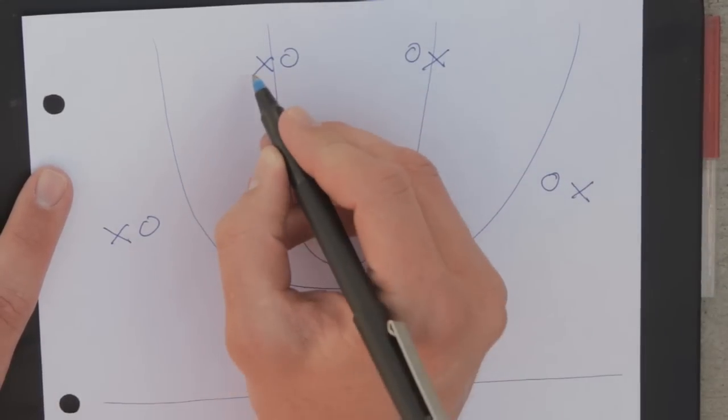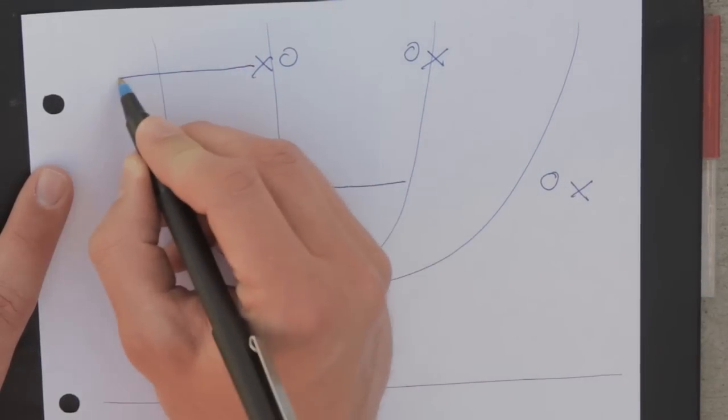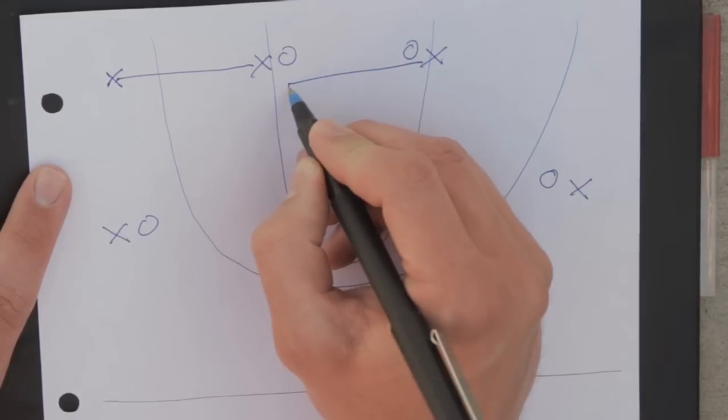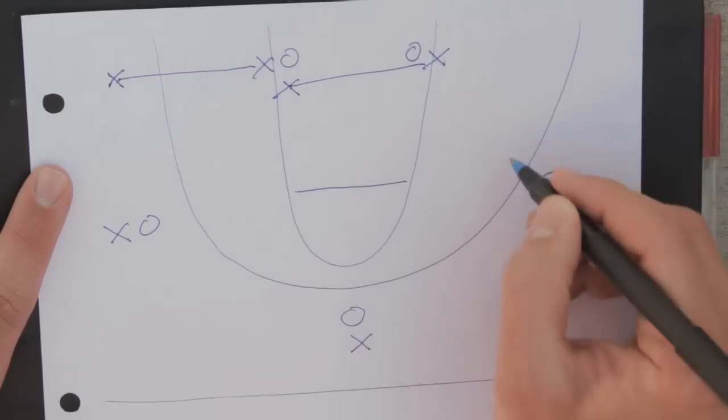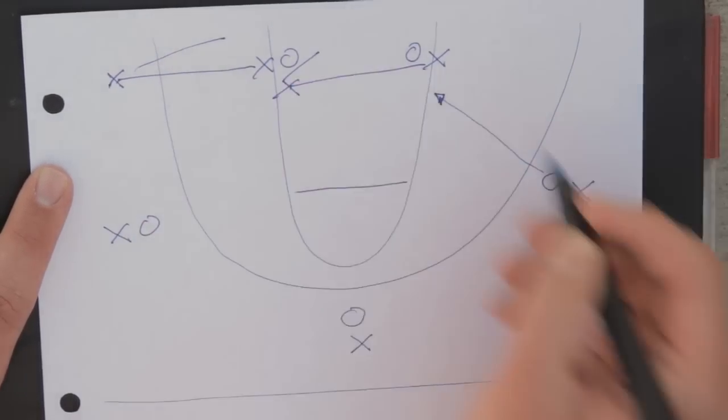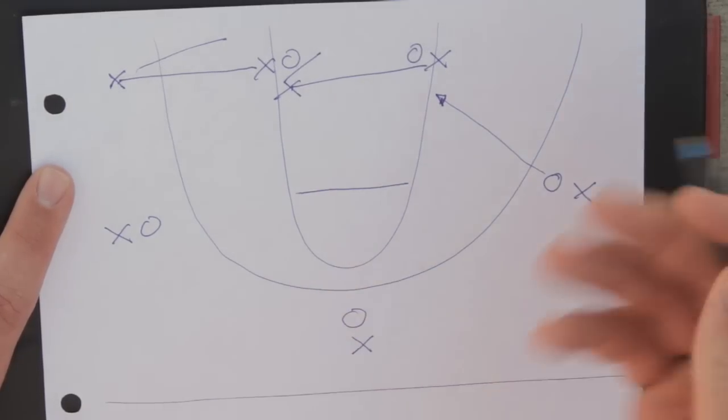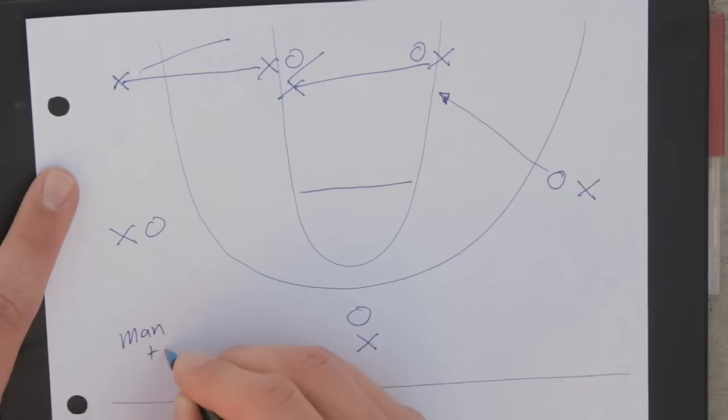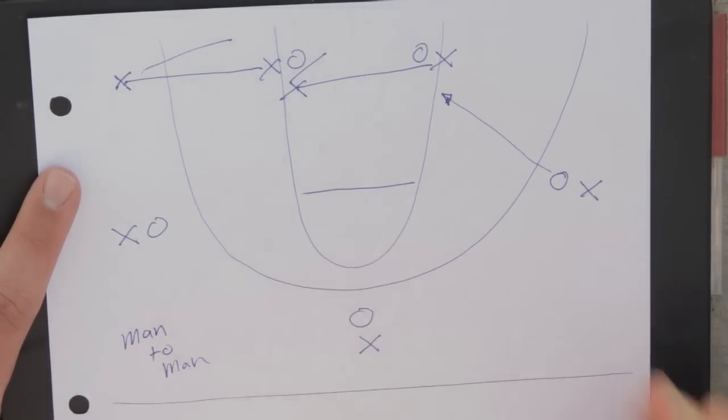But if there were a situation where this offensive player were to come out here and this offensive player come here, this defensive player needs to drop back to help with baseline drives from either of these players. But that is a simple man-to-man defense that you can run for your team.